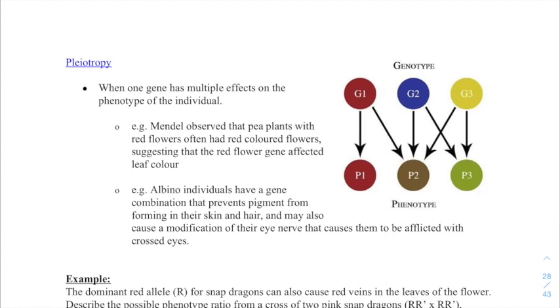Alright, so pleiotropy is the idea that one gene actually has effect on multiple endpoints. So a good example is that a lot of the time there are definitely certain genes, for example, in humans that can have multiple effects. Okay, so pleiotropy is when one gene has multiple effects on the phenotype of individuals.